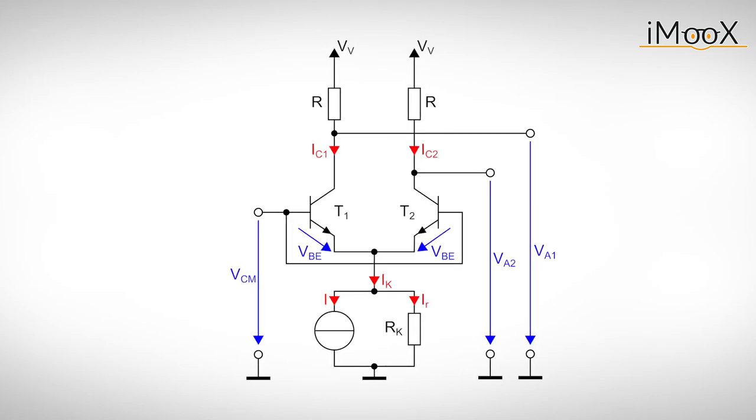The inference of the common mode voltage VCM is determined in a similar fashion. We assume that the potential at the emitters change accordingly to the common mode input voltage. This change in voltage causes a change in current through the internal resistance of the current source. Due to the same base emitter voltages, one half of this current flows through each of these transistors. Similar to before, these currents changed the output voltages. This time, however, the change is the same for both outputs.